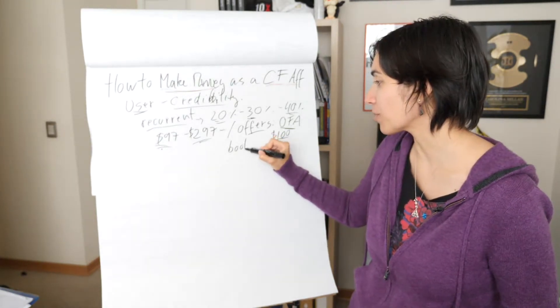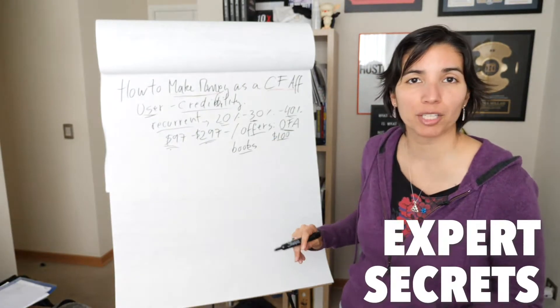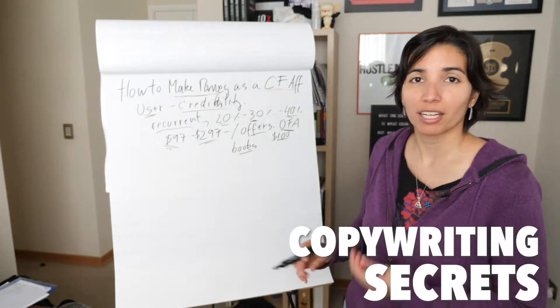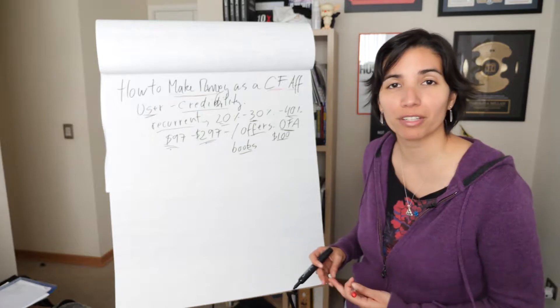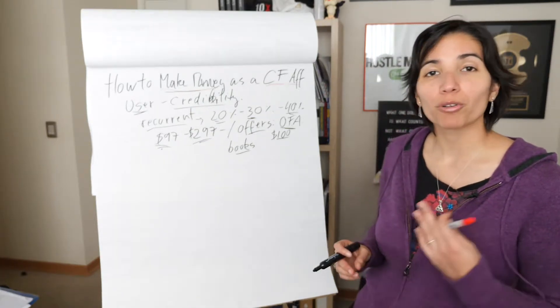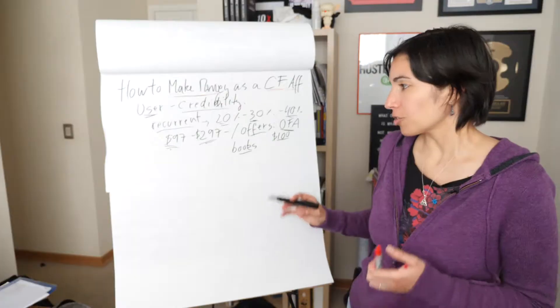So that's one offer you are able to promote as a brand new affiliate. You can also promote Russell Brunson's books, Dotcom Secrets, Expert Secrets, Traffic Secrets, Copywriting Secrets. There are a bunch of other books now that you can promote as an affiliate of ClickFunnels.